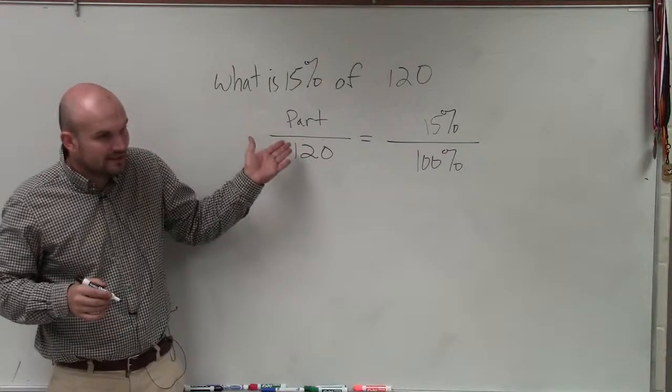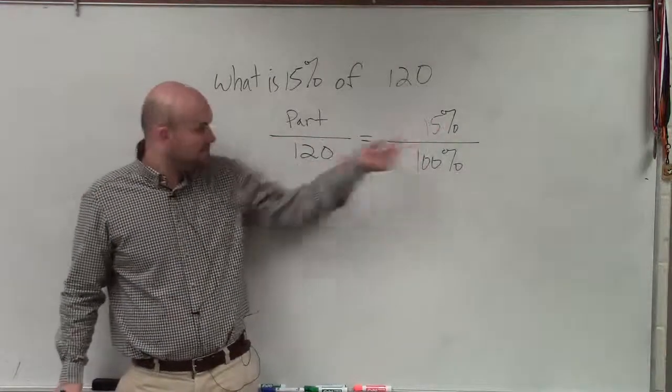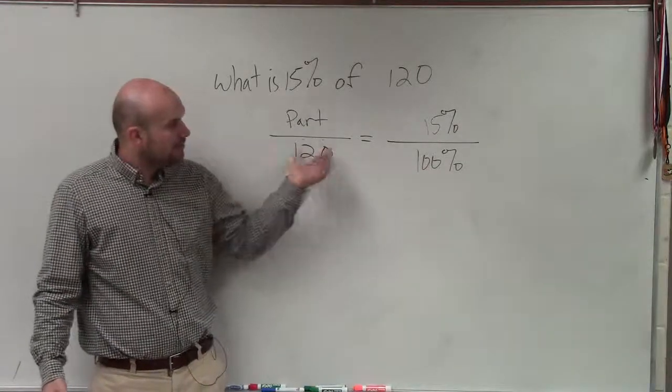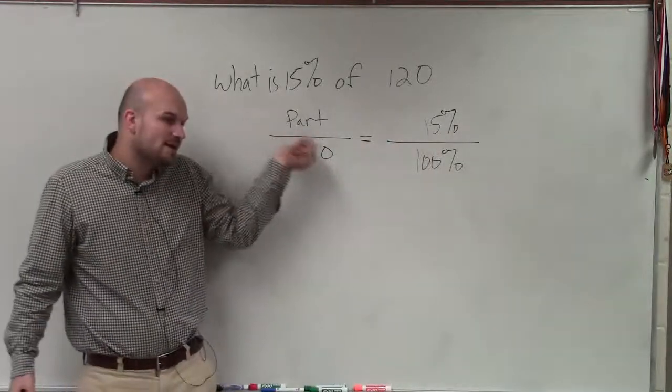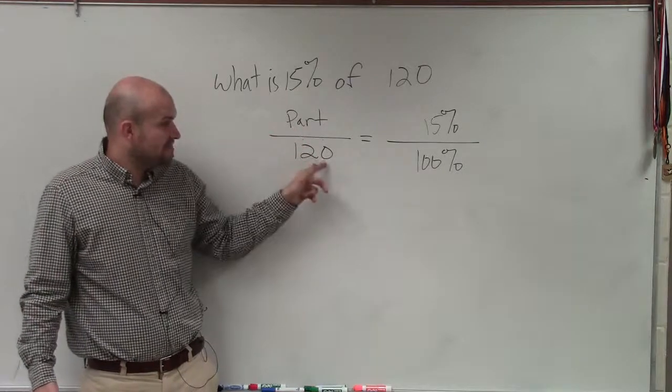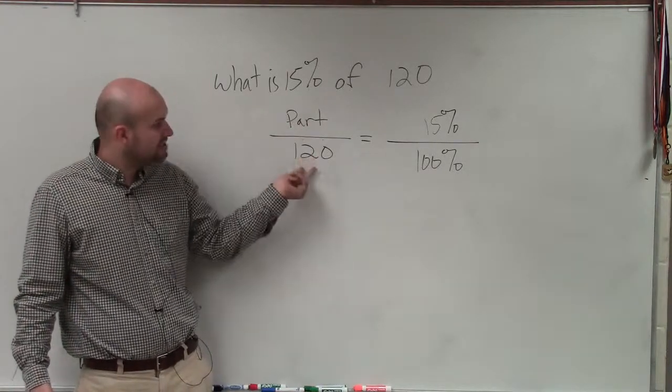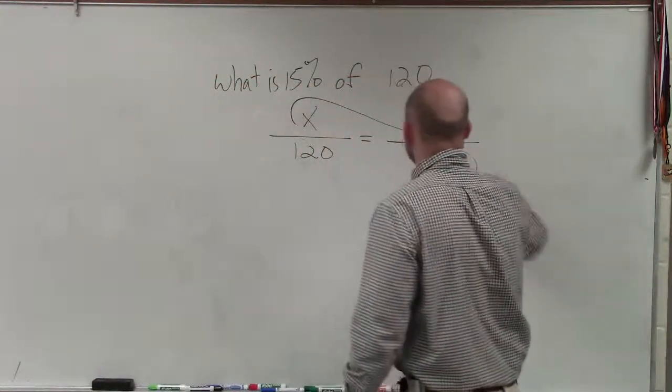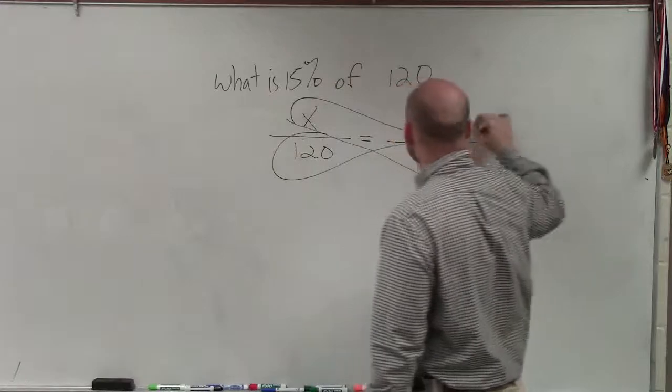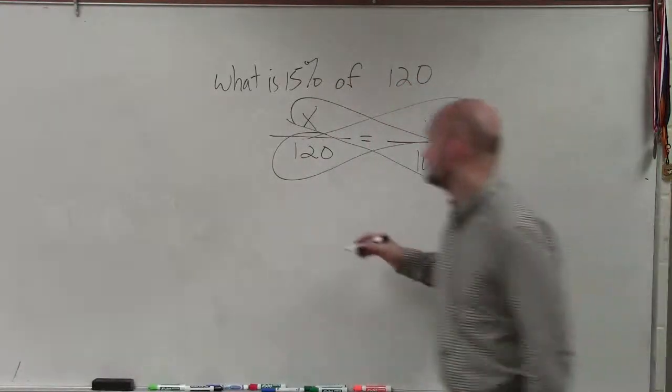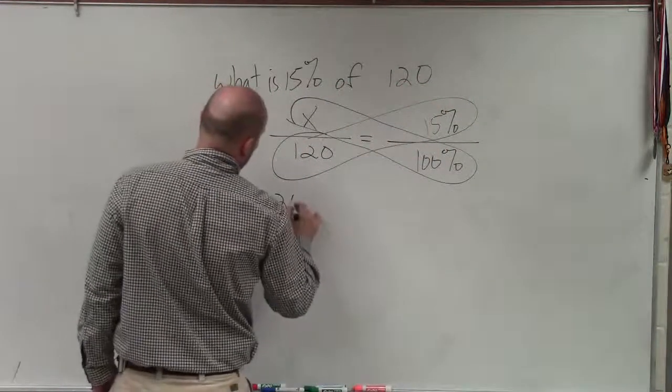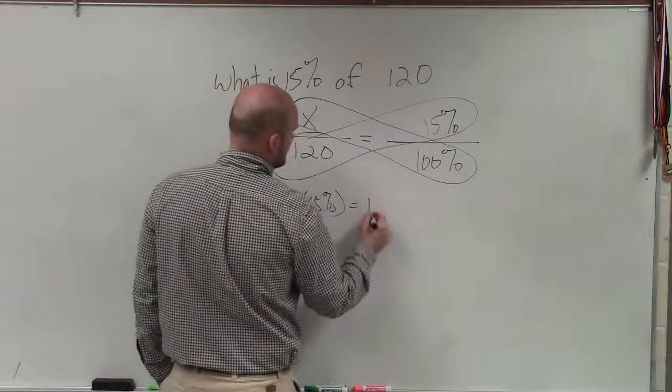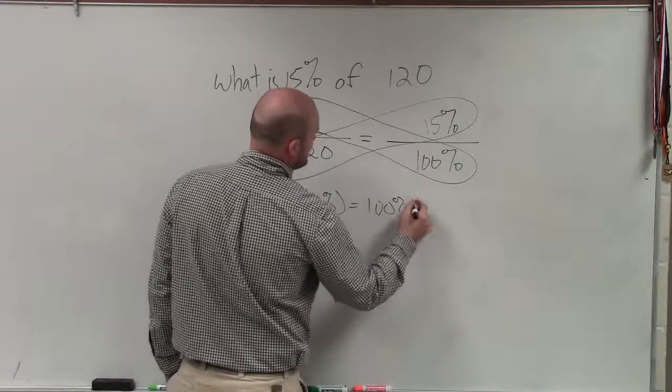So the thing that we're going to look for is the part. What part of 120 is equivalent to 15%? Because 120 is the whole, right? That's like 100%. That's the whole. So 15% is the part, well, then what number is that for 120? Because obviously, if that was 100, that would be 15. But this is 120. So what's the new one? So I'm going to write this as an x. And then, since we have a proportion, we can apply the cross product.